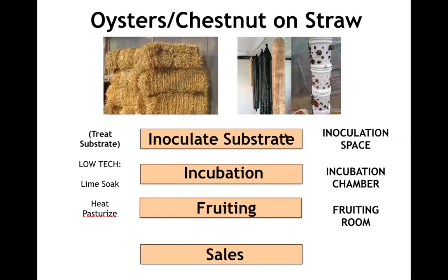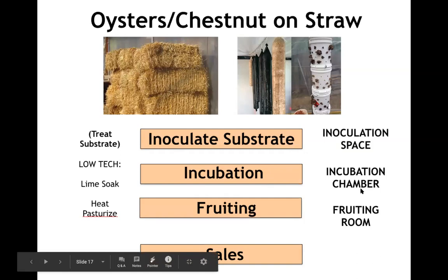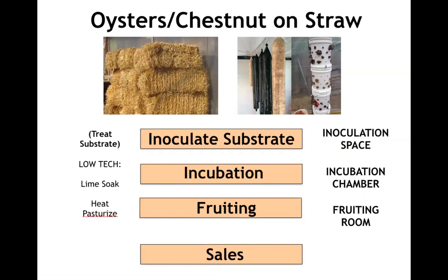Looking at oysters on straw — one advantage is we take out those first infrastructure-heavy pieces and buy in spawn from a supplier who has done that heavy sterile work. We take that spawn, treat our substrate on-farm, and inoculate it. The inoculation space in this case is very low tech — it could even be outdoors in open air because straw is low-nutritive and doesn't have a lot of threats from competitive molds. We can use lime to raise the pH, which oysters tolerate, or heat pasteurization at 140–160°F for one to two hours.